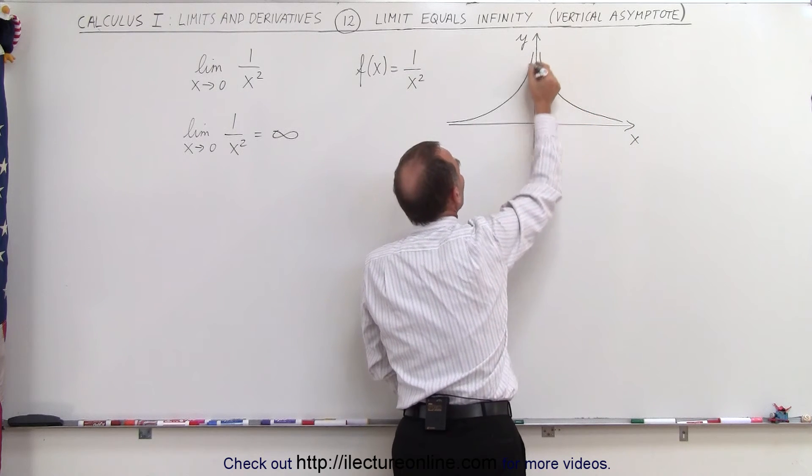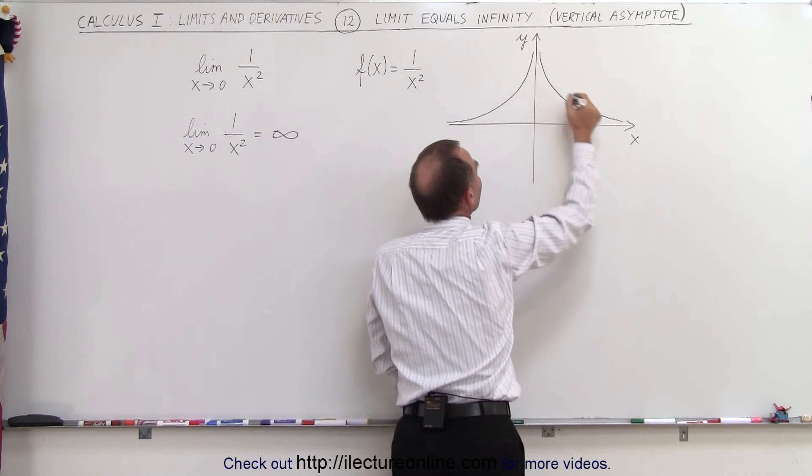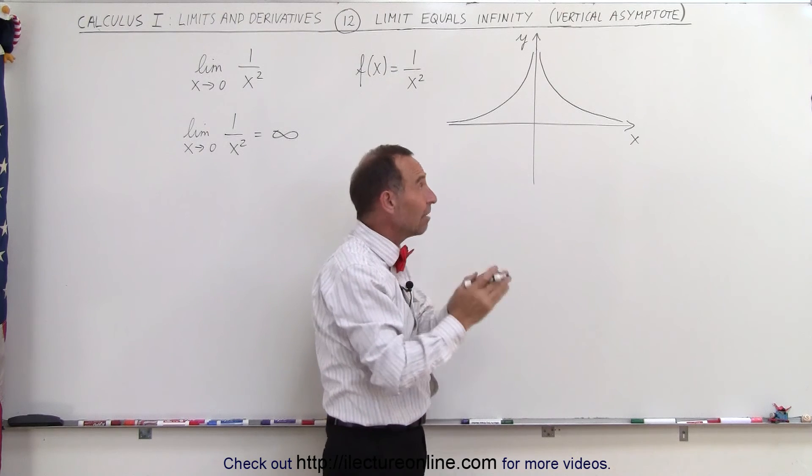You can see that the function approaches the y-axis from both directions, from the negative side and the positive side. Notice that the condition is met: if we approach zero from both directions, we get the exact same limit, infinity, positive infinity. So there's a valid limit there. Approaching from both sides, the y-axis becomes the asymptote.